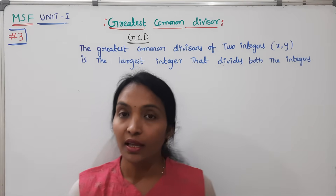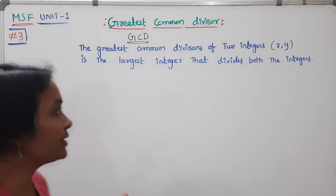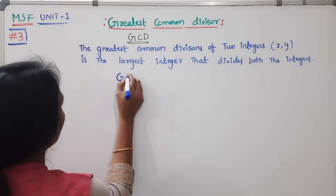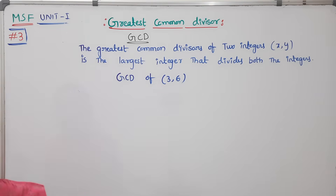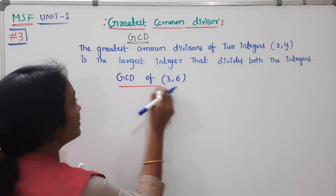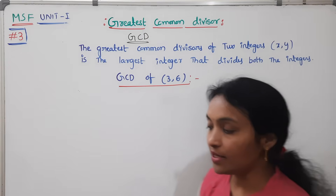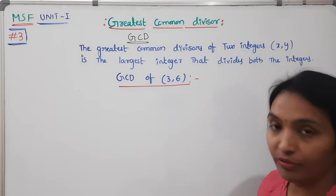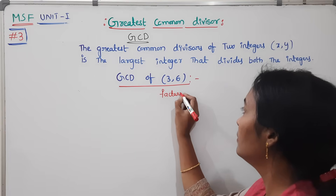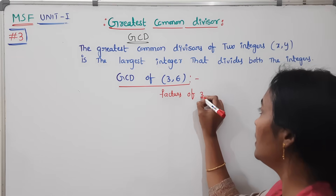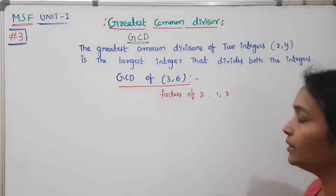For example, a simple example: find GCD of 3 and 6. First, what we have to do is find the common factors of both. Let's find the factors of 3 first. The factors of 3 are 1 and 3.